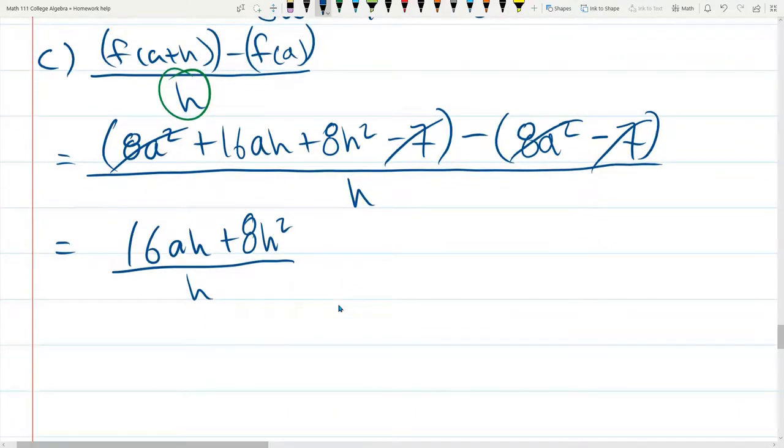Now, it's tempting to cancel h's here, but remember in the numerator, the h's are being added together, which addition does not cancel division. Multiplication cancels division. So, I need to rewrite the numerator, but write it as h times something. So, both terms in the numerator have an h, so I can factor an h out.